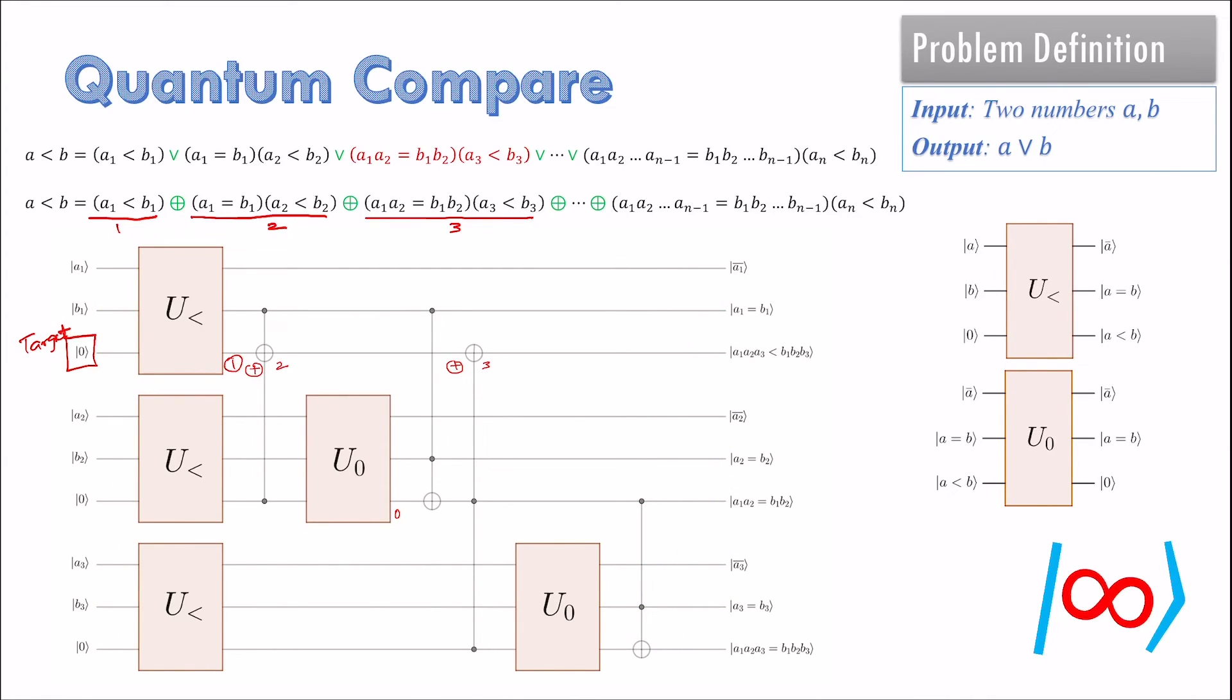As for each bit comparison, we use 3 qubits, the circuit uses 3N qubits in total. The previous algorithm uses 5N qubits. Hence, this circuit uses 40% less number of qubits.